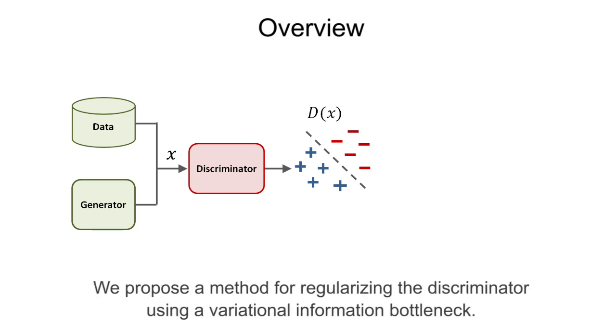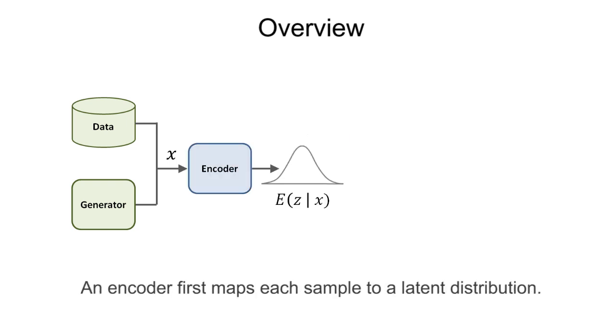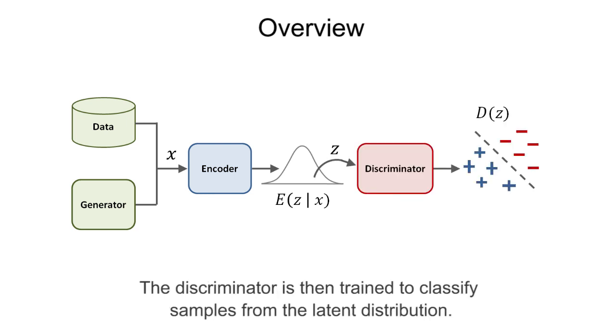We propose a method for regularizing the discriminator using a variational information bottleneck. An encoder first maps each sample to a latent distribution. The discriminator is then trained to classify samples from the latent distribution.